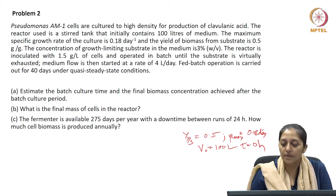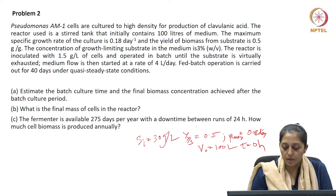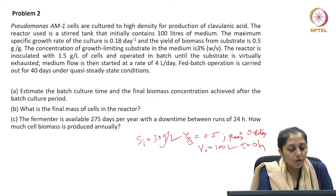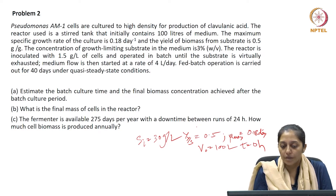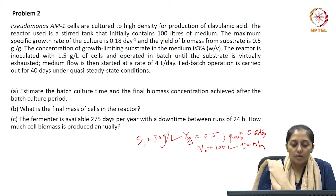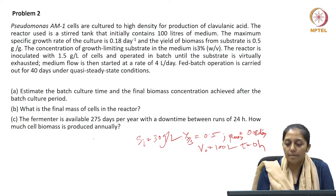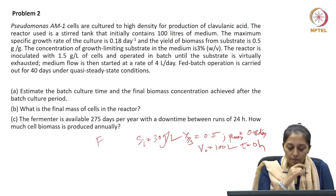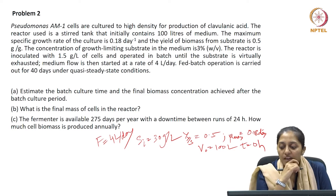The concentration of growth limiting substrate in the medium is 3 percent, so the feed concentration is 30 grams per liter. The reactor is inoculated with 1.5 grams per liter of cells and operated in batch until the substrate is virtually exhausted. The batch started with 1.5 g/L of X until all the substrate S is consumed. Medium feed is then started; the batch is converted to fed batch at a flow rate of 4 liters per day, and fed batch operation is carried out for 40 days at quasi steady state.